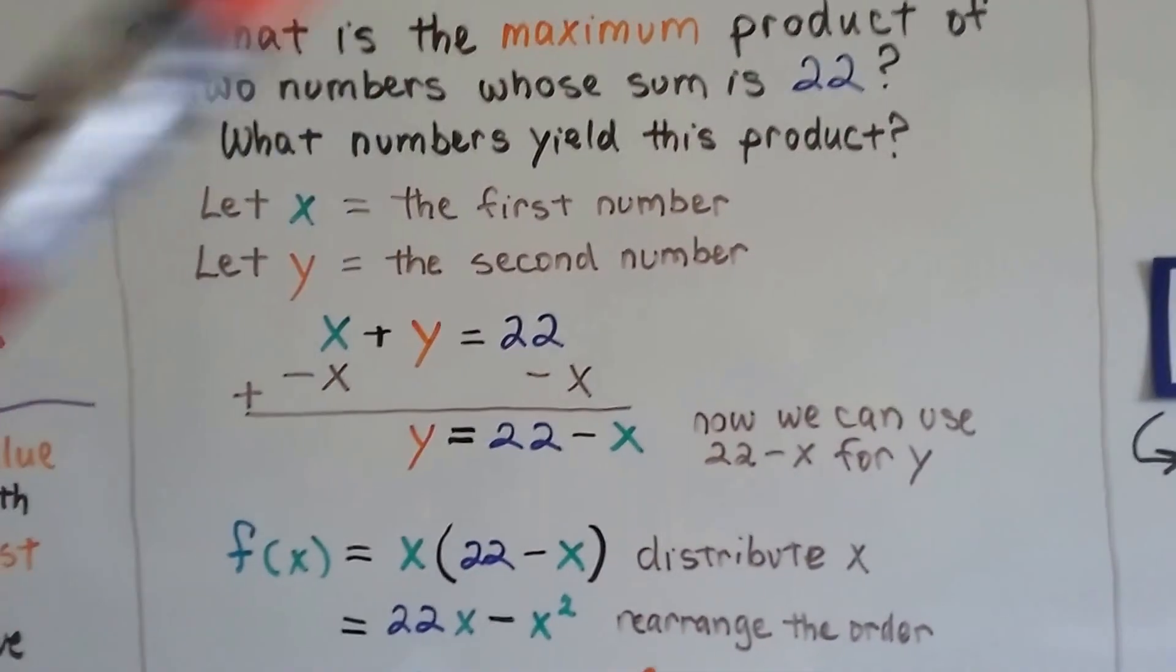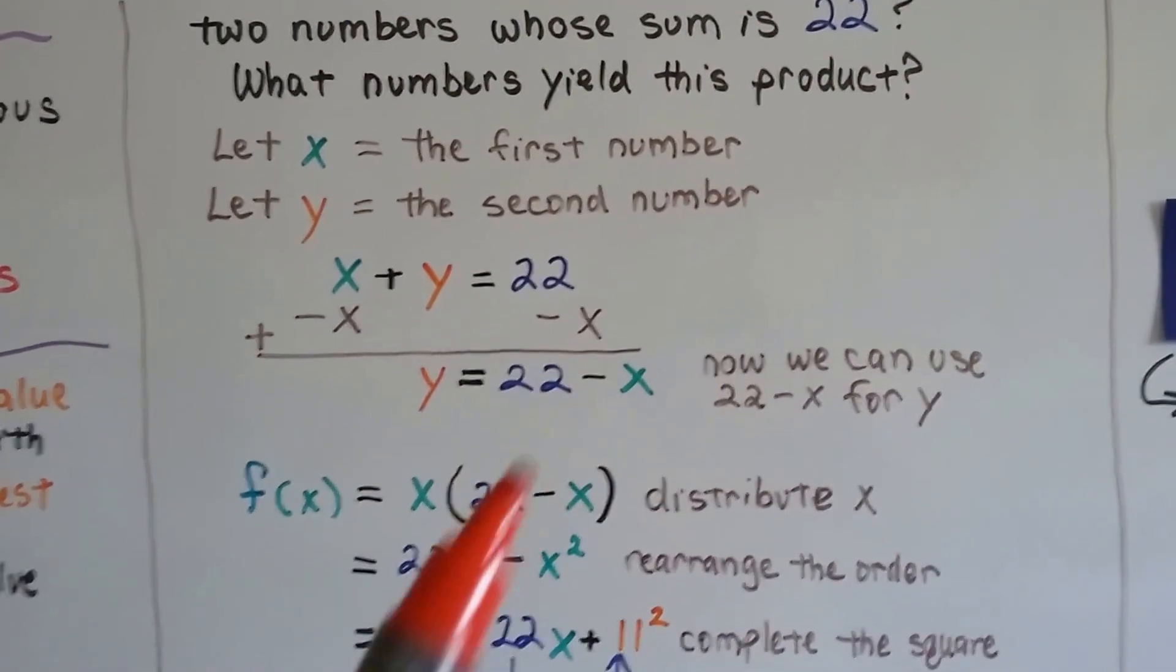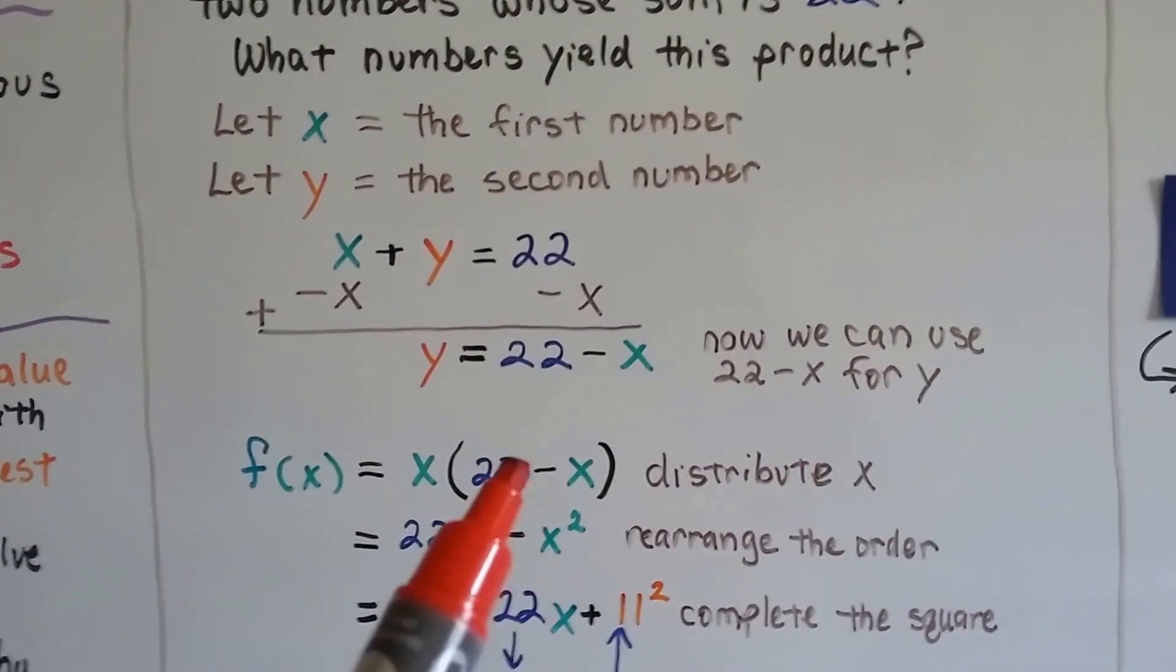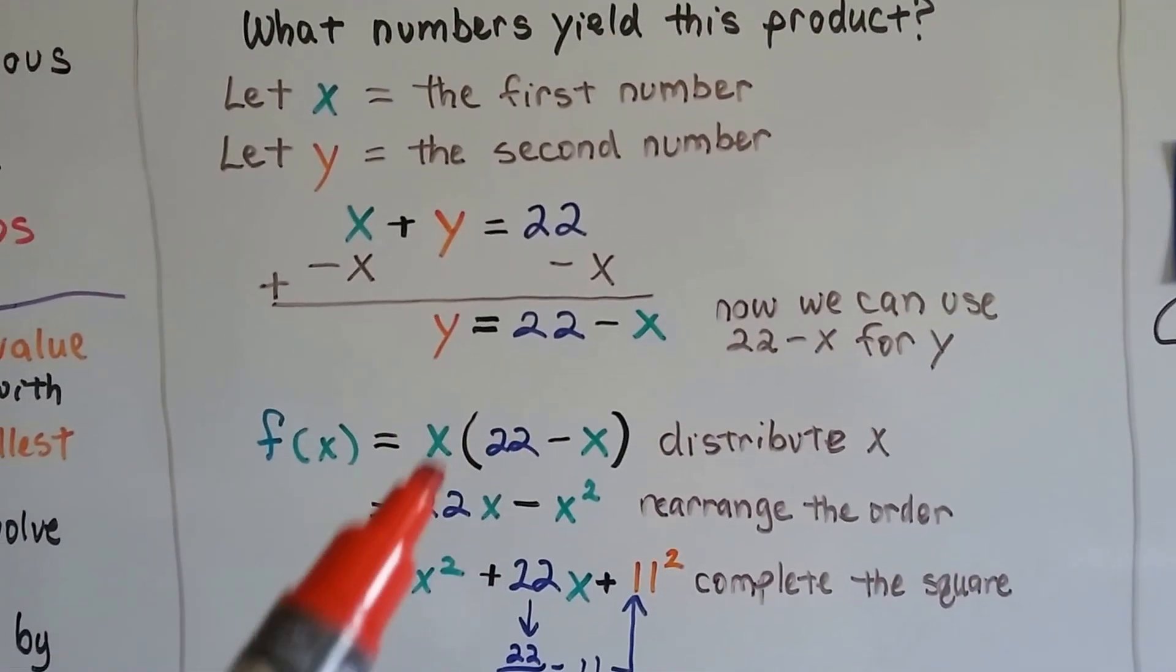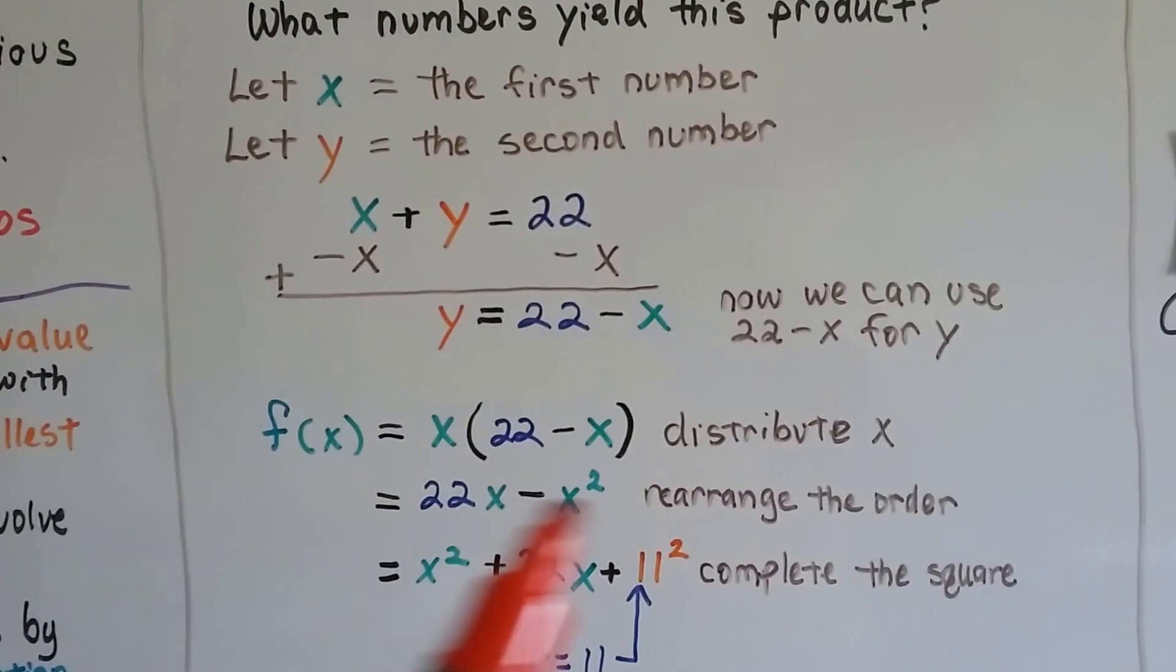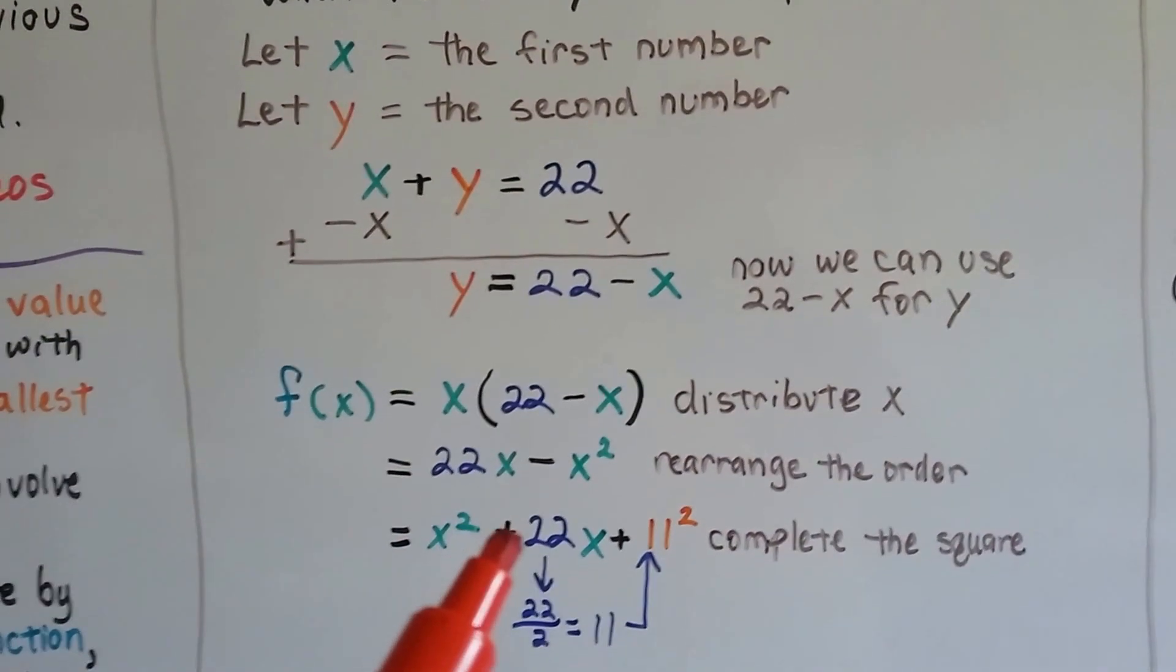For that maximum product, we need to do x times y, which is x times (22 - x). We can distribute the x and get 22x - x². We can rearrange this order as -x² + 22x.